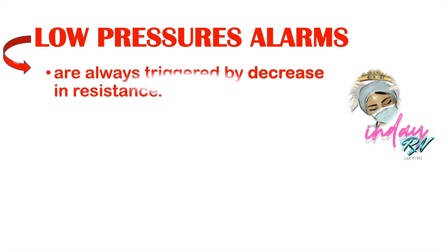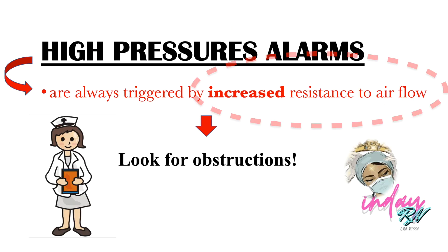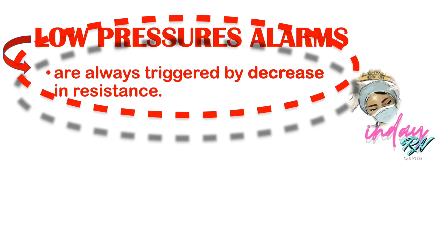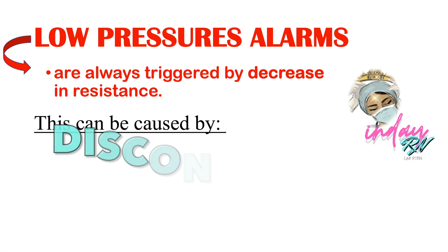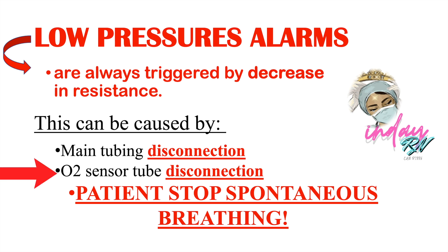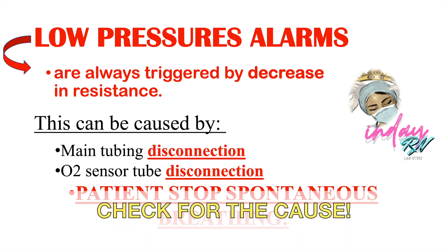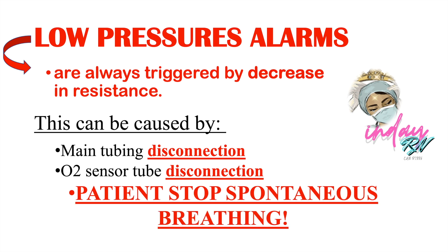Now let's discuss low pressure alarms. These are triggered by a decrease in resistance to airflow — the opposite of high pressure alarms. Low pressure alarms can be caused by disconnection: either main tubing disconnection or the auto-sensor tube disconnection. Always check for the cause. If there is a low pressure alarm, the patient may have stopped spontaneous breathing.